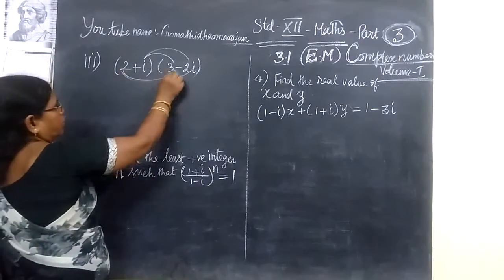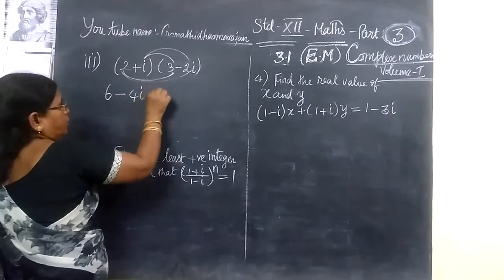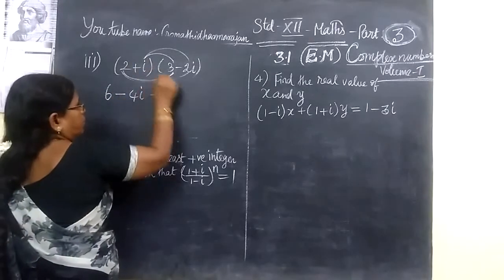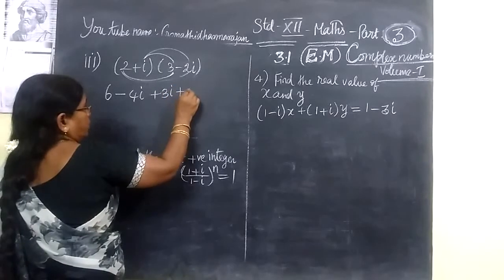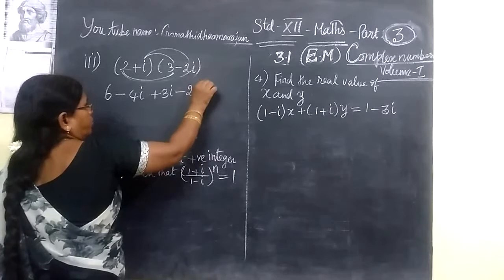You see the first one. Multiply 2 + 6i, 3 - 2i. 6 - 4i, then plus 3i, then plus minus 2, minus 2i squared.